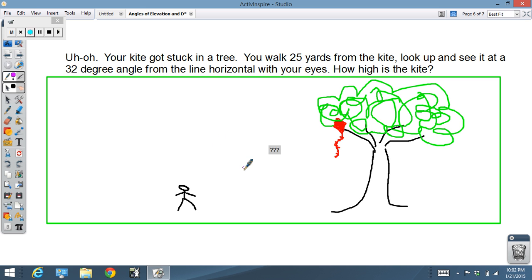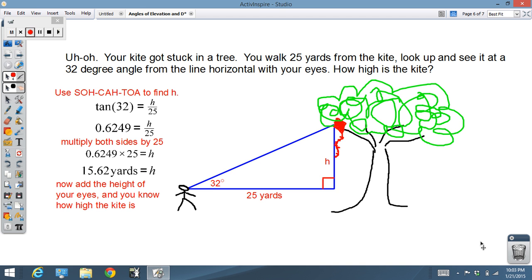Uh-oh, the kite got stuck in a tree. You walk 25 yards from the kite and you look up. So you are 25 yards from the kite, you look up, and you want to know how high is the kite. How are you going to solve that problem? Answer coming right now. Draw your triangle and use SOH-CAH-TOA to find height.